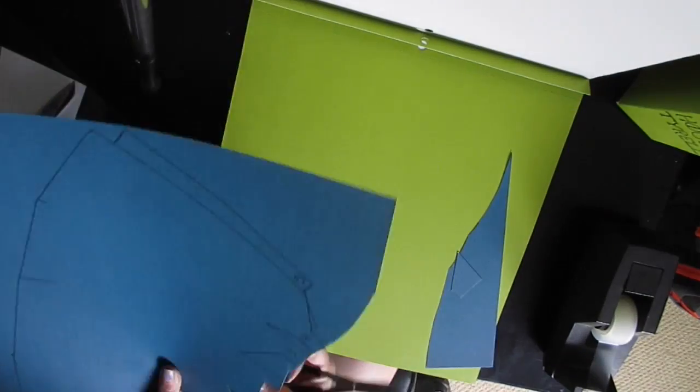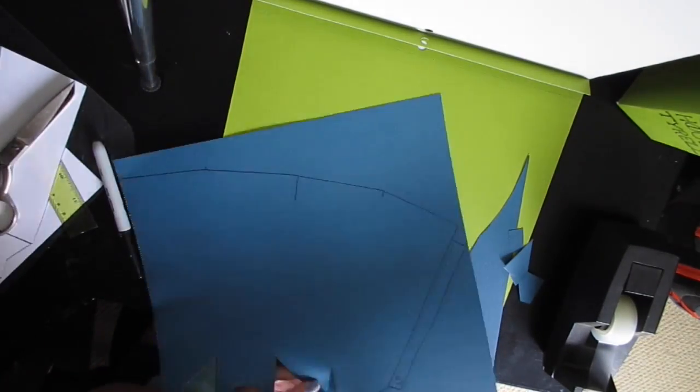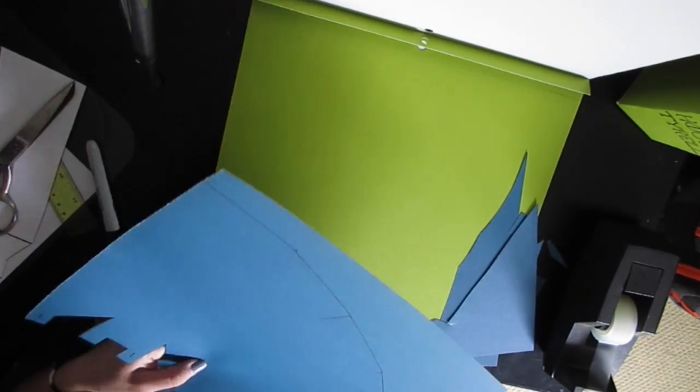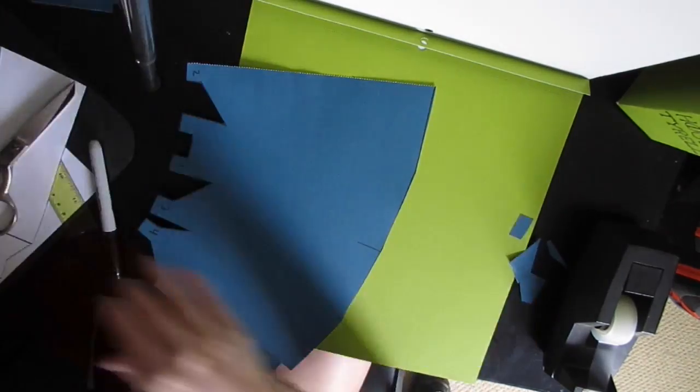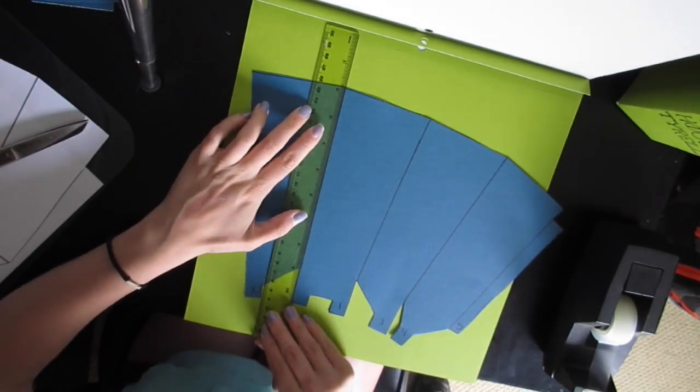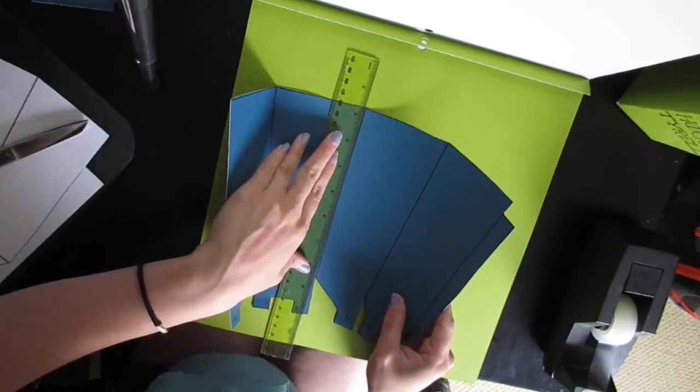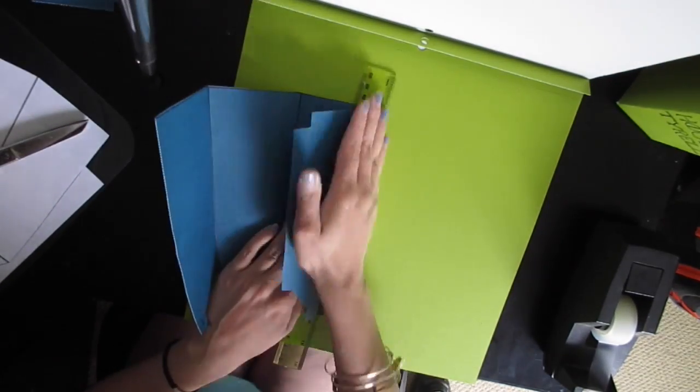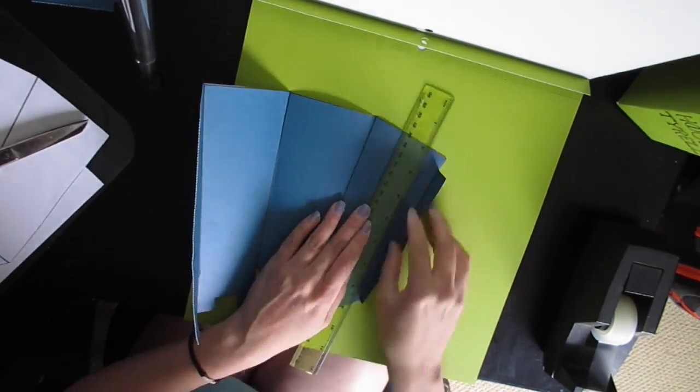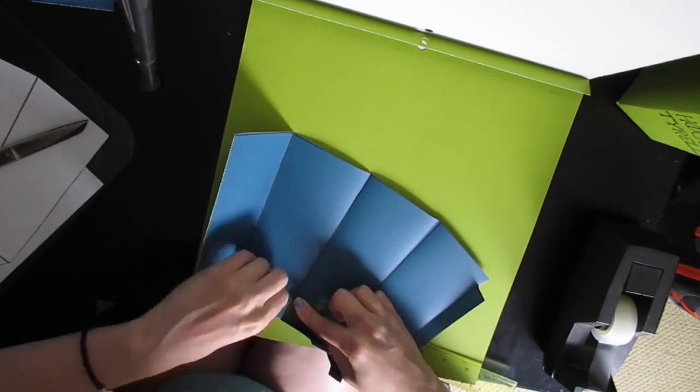Next, take your scissors and start cutting out your stencil. After you cut it out, take your ruler and place it on the line in the middle of your paper. This ensures that when you push the paper over the ruler, it creates a perfect bend.